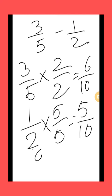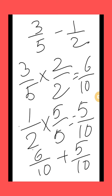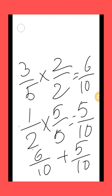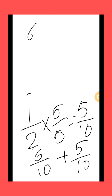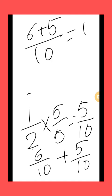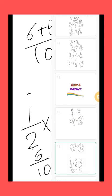Now we subtract both the like fractions: 6 by 10 minus 5 by 10. By following the same procedure, first of all we subtract the numerators — that is 6 minus 5 — keeping the denominator same, which is 10. 6 minus 5 is equal to 1 by 10. So your answer is 1 by 10.